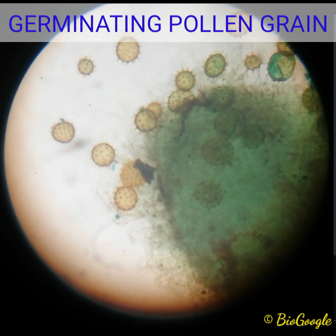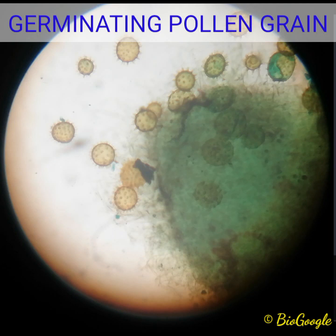During pollination — after pollination — there are some reactions between the pollen grain and the stigma. If the reactions are compatible, then the pollen grain germinates. If the reactions are incompatible, meaning negative reactions, in such cases the pollen grain does not germinate on the stigma.